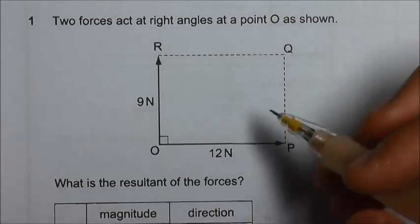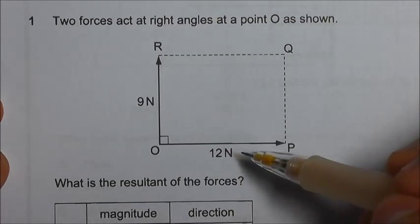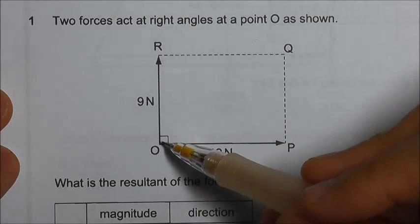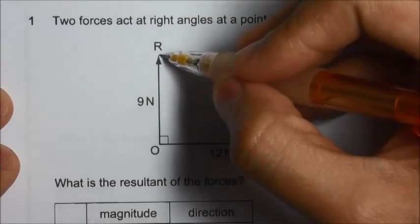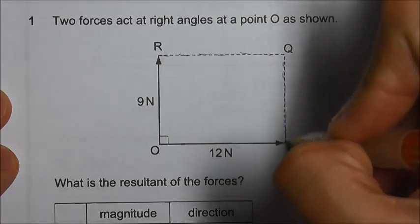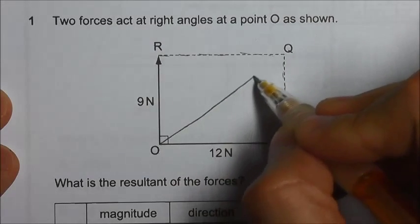To find the resultant force of this 9N and this 12N forces, you can use the parallelogram method since the tail of both forces are together at O. So what we do is draw a parallelogram and the resultant force will be from O to Q.